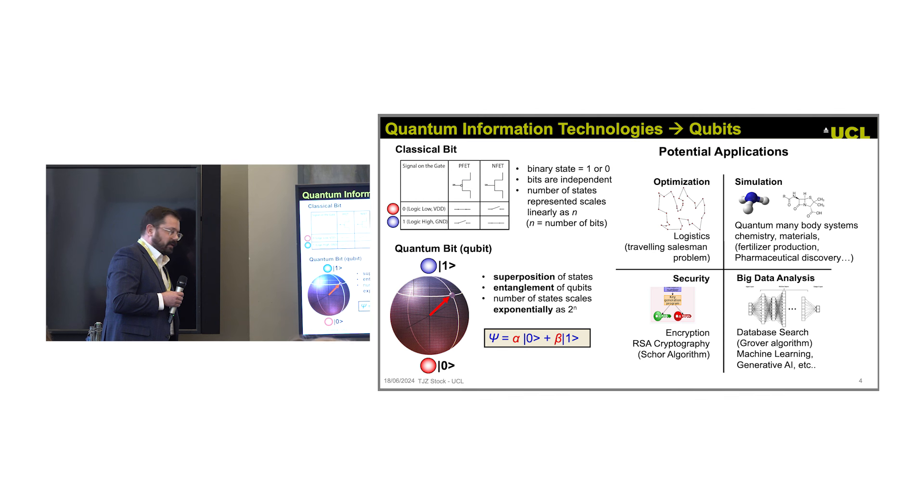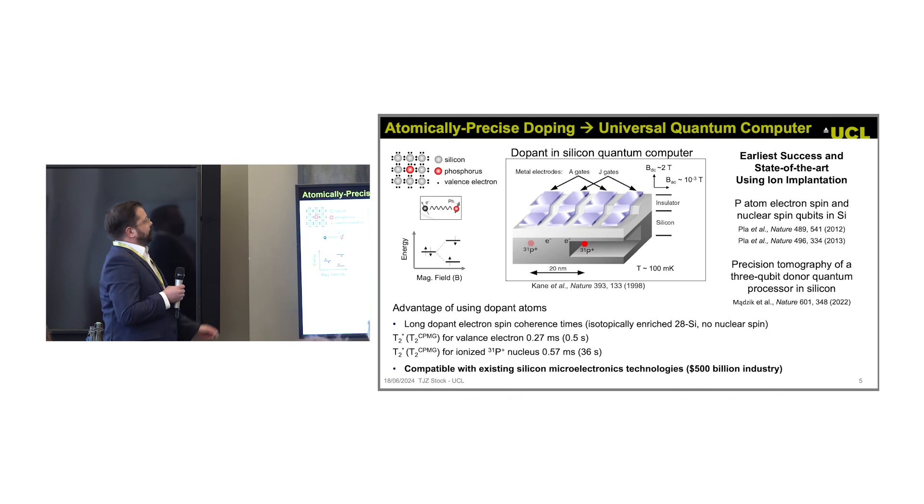So this is why we might want to make this thing. It turns out that an individual dopant in a silicon crystal is a good candidate for this. When you have an individual dopant in silicon, we get two spins: the electron spin and the nuclear spin. You put a magnetic field, you Zeeman split these, and now you can use this as your two-level system.